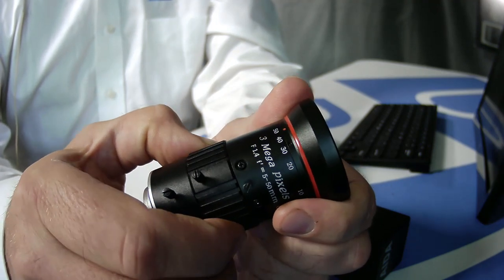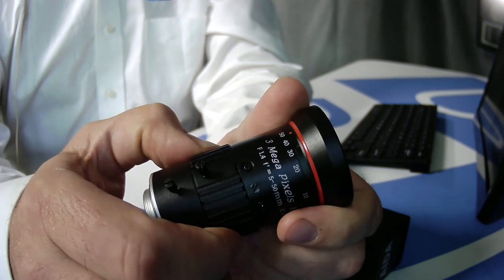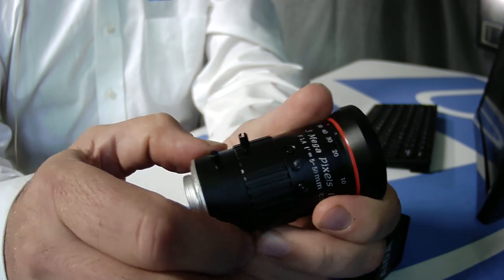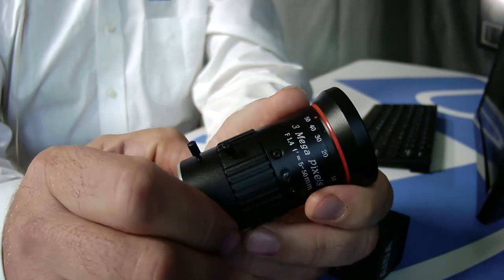This one here controls the iris, so we can clamp it down and open it up depending on the depth of field that we might want. And then back here of course is focus. So between those three we've got just about everything.